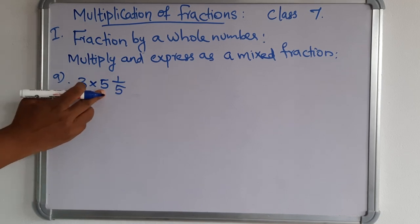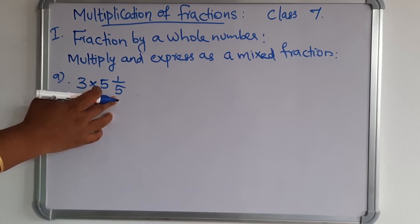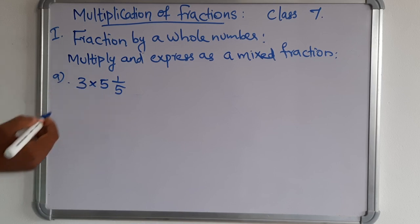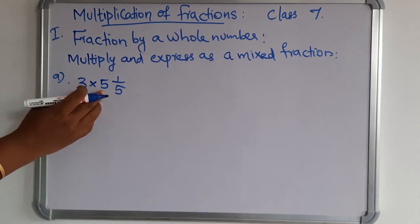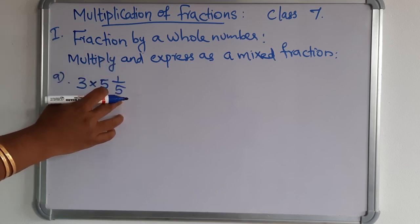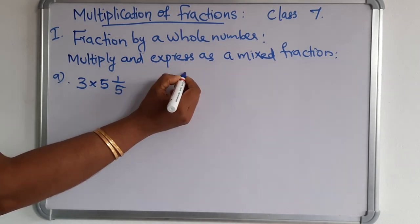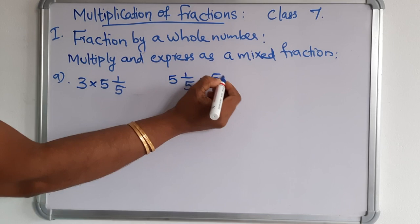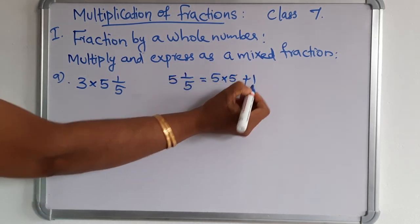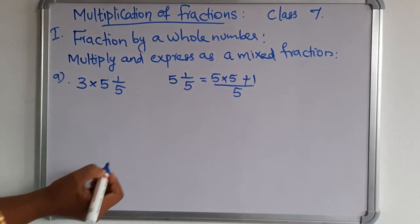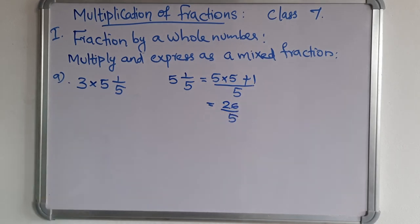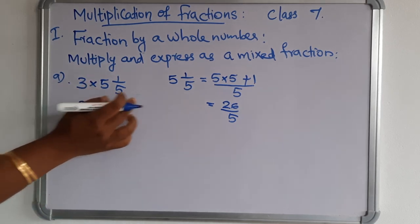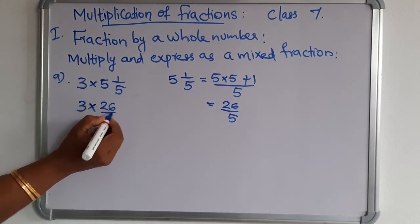3 is a whole number. 5⅕ is a mixed fraction. We need to convert the mixed fraction to an improper fraction. The rule is: whole number × denominator + numerator, divided by denominator. So 5⅕: 5 × 5 = 25, and 25 + 1 = 26. So 5⅕ = 26/5. Now we have 3 × 26/5.